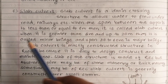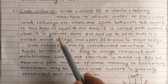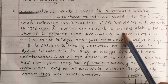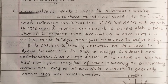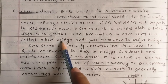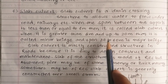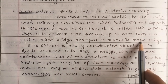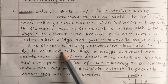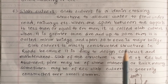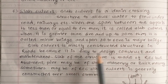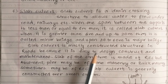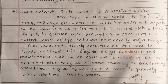If a slab culvert span is more than 6 meters and up to 20 meters, it is a minor bridge. When it is greater than 20 meters, it is a major bridge. The slab culvert is the most commonly constructed structure in roads because it is easy to design, construct, and maintain.